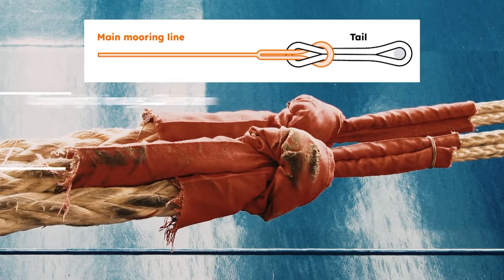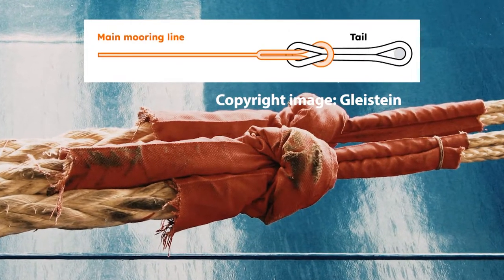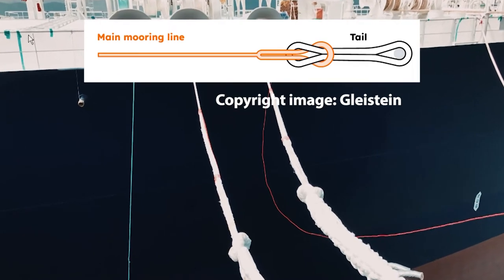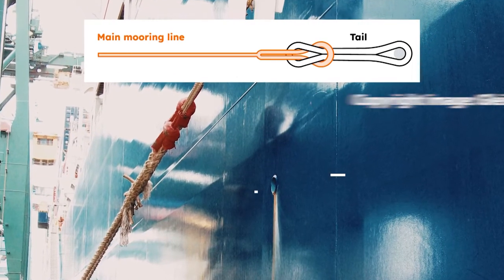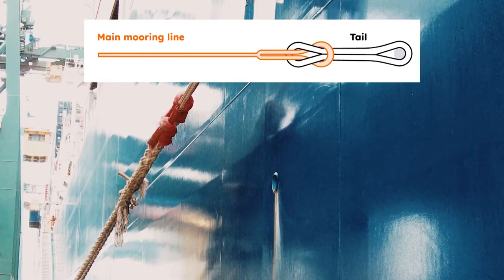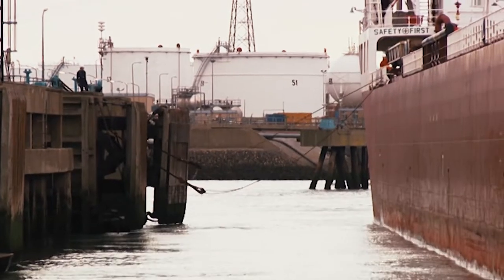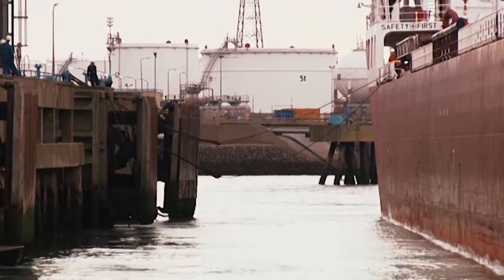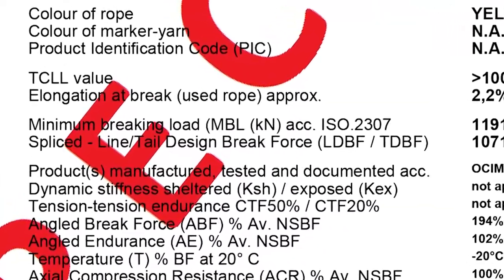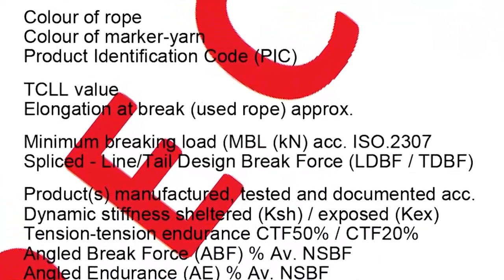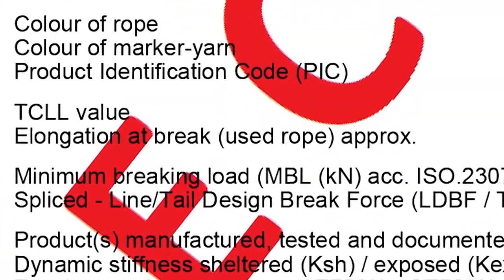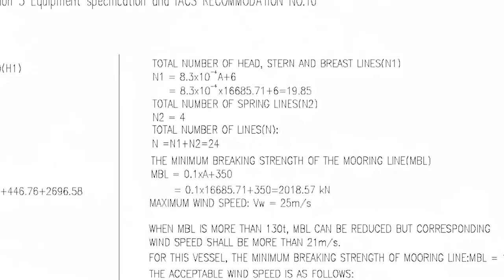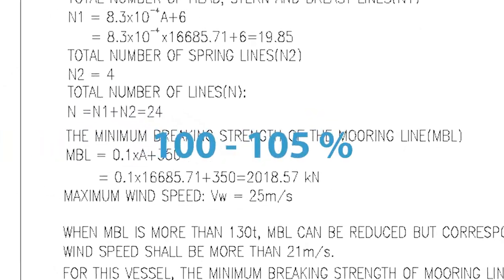For lines with less elasticity, wires or HMSF mooring tails should be used to avoid shock loading of lines. Ensure that the line meets the strength requirements — the line should comply with the MBL, the minimum breaking load, given in the mooring arrangement plan within a range of 100 to 105 percent.